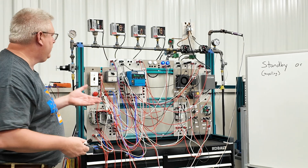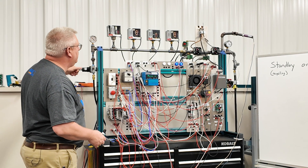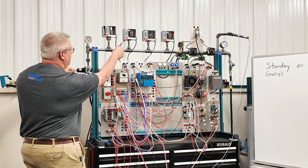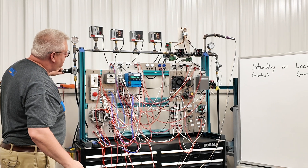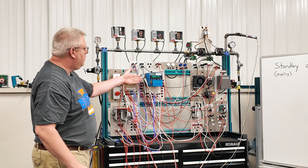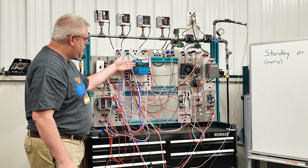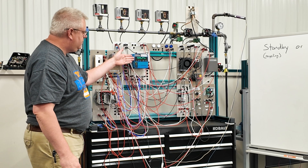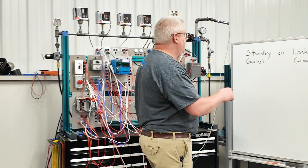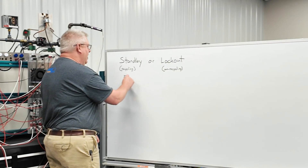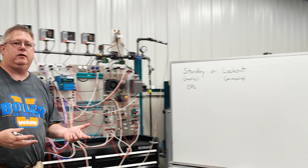I'll demonstrate that by tripping this boiler on high steam pressure. I'm increasing the pressure — we're going to trip on this switch. There, we've shut down. We've gone to post purge, and then standby. So our operating pressure limit, OPL, is in our standby circuit.